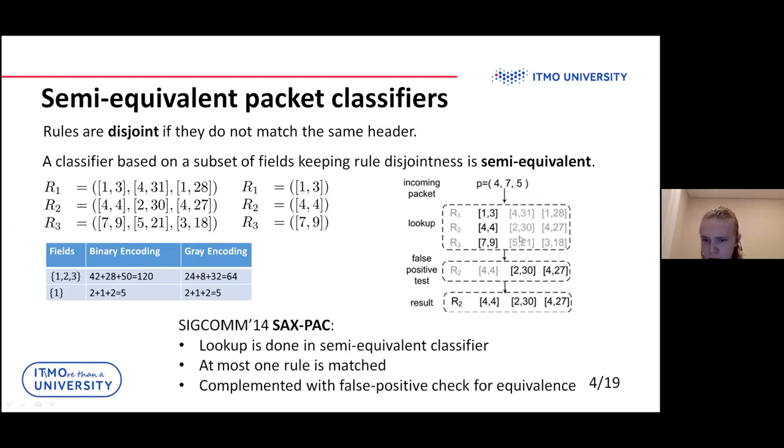There are three rules: R1, R2, and R3. The main idea is that we do not need to check all parameters. We need to find out the rule which matches the given packet. Also, in this task, rules are values disjoint, and we will utilize this.